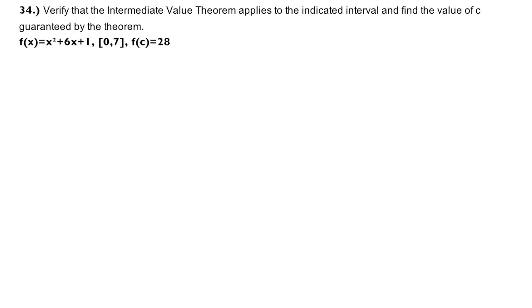Number 34. Verify that the Intermediate Value Theorem applies to the indicated interval and find the value of C guaranteed by the theorem. F of X is equal to X squared plus 6X plus 1, on the interval of 0 to 7, and F of C is equal to 28.